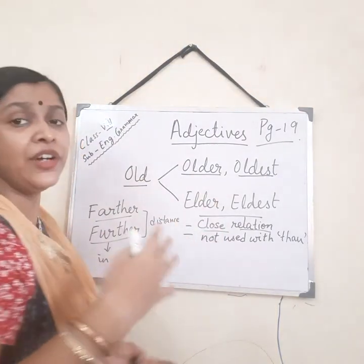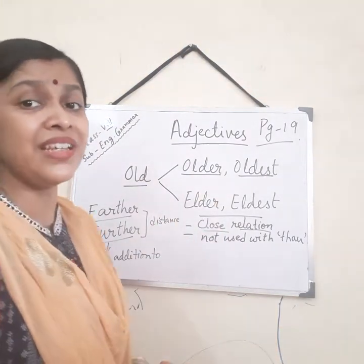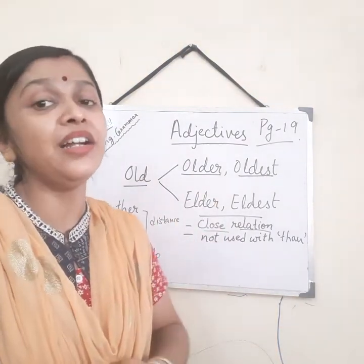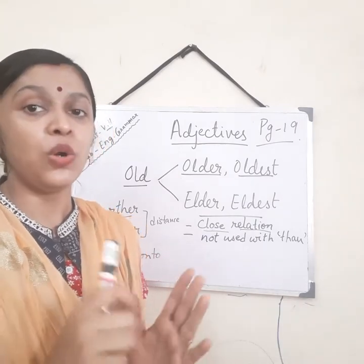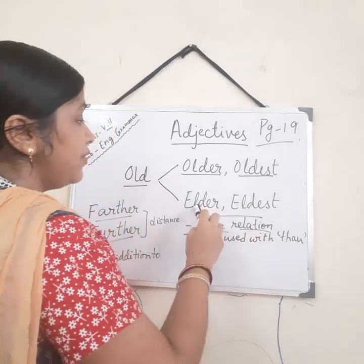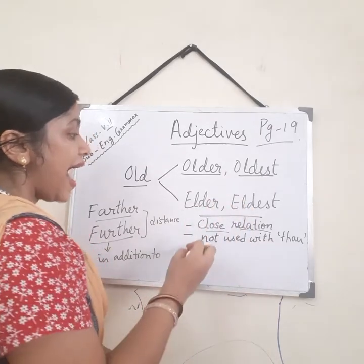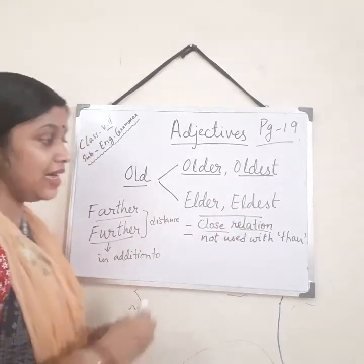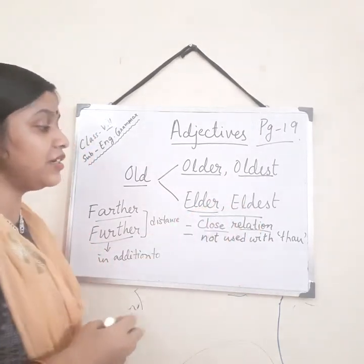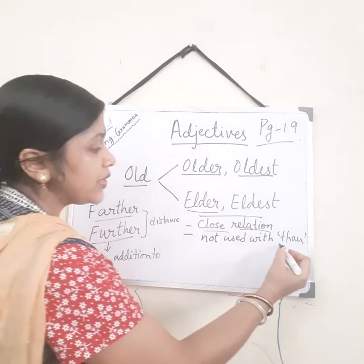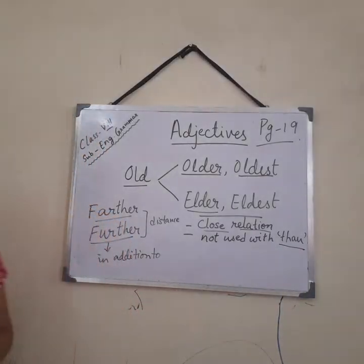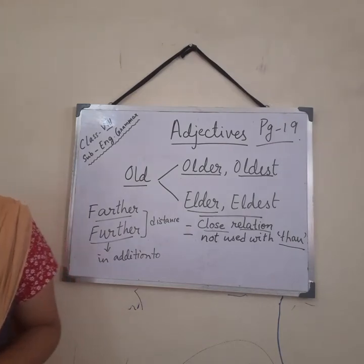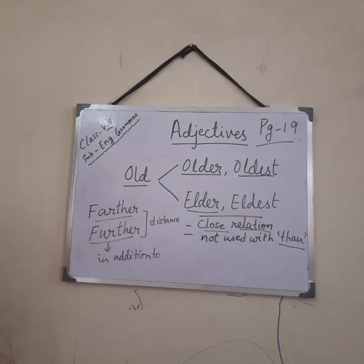Elder and eldest are not used for non-living things. I cannot say 'this building is elder to that one.' Only for close relations we use elder and eldest. Also, elder in the comparative degree does not use 'than' — we use 'to' with it. If a preposition is not required, then it's alright.